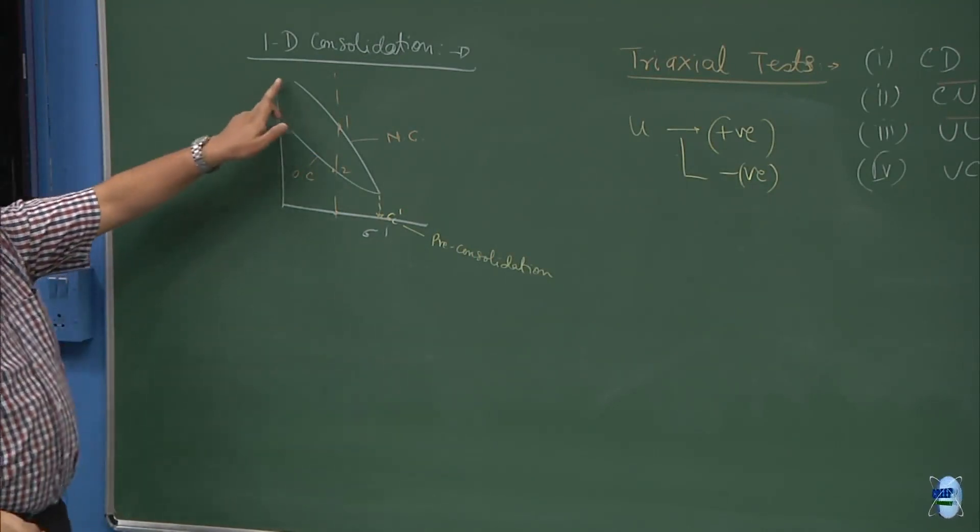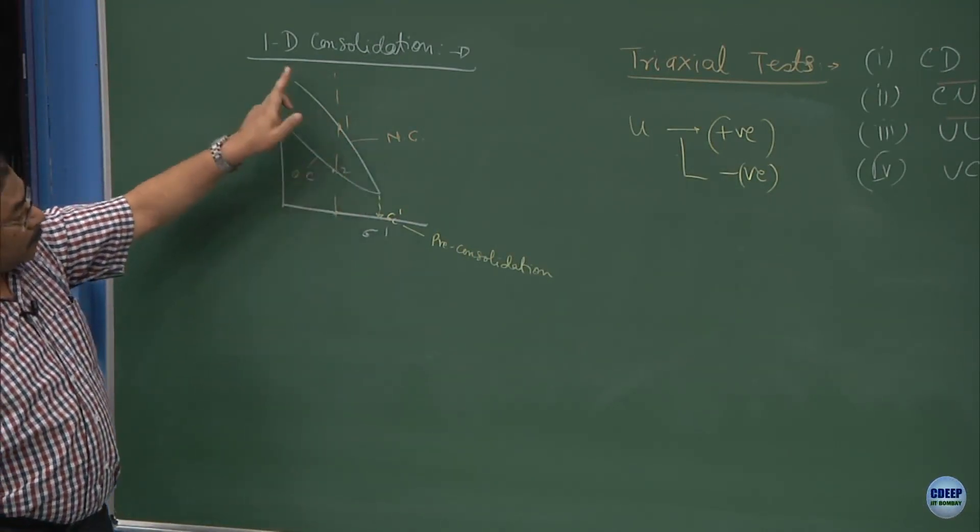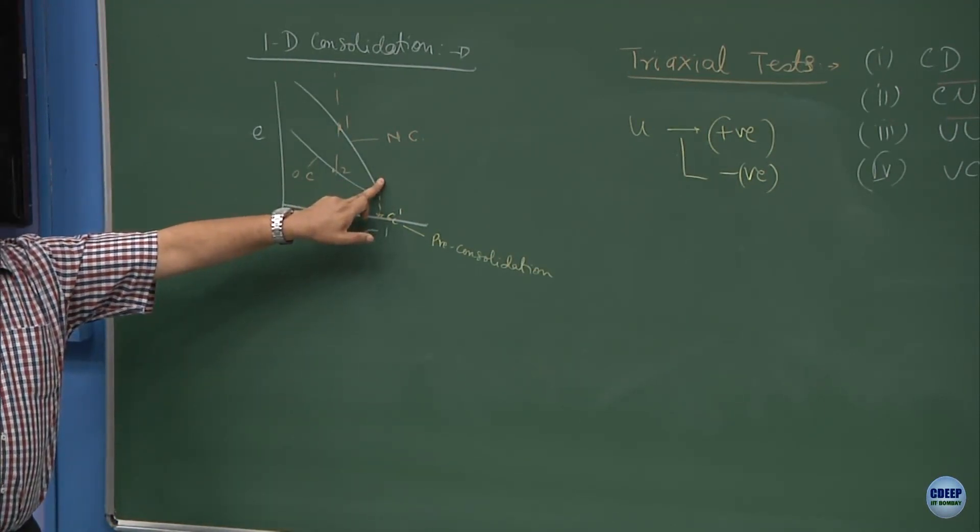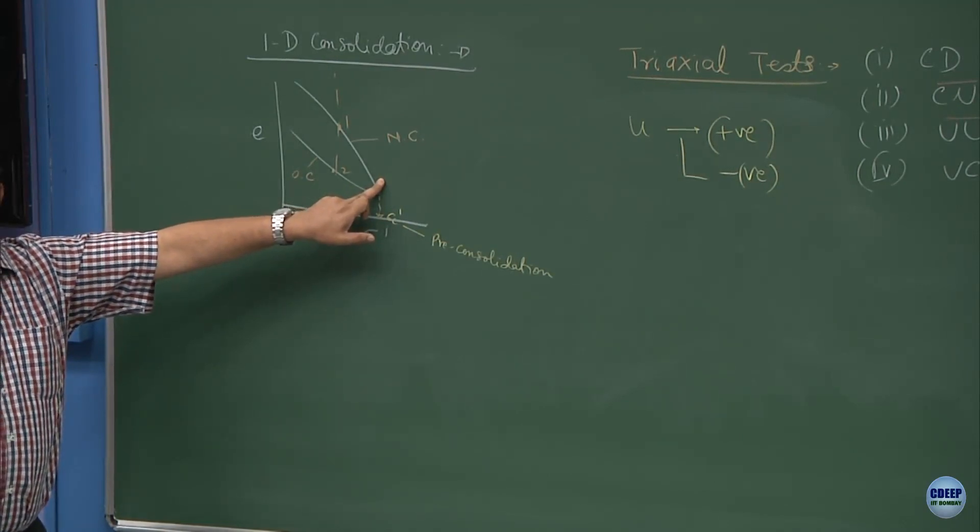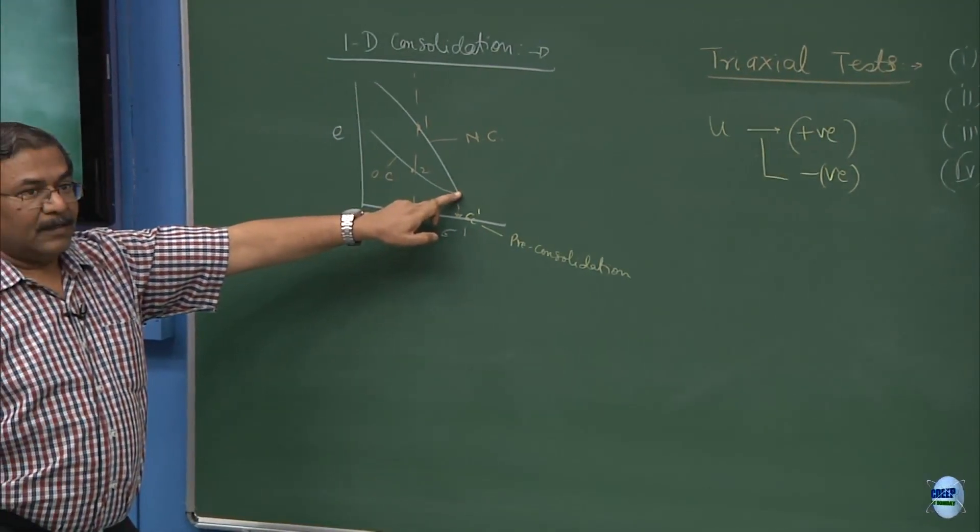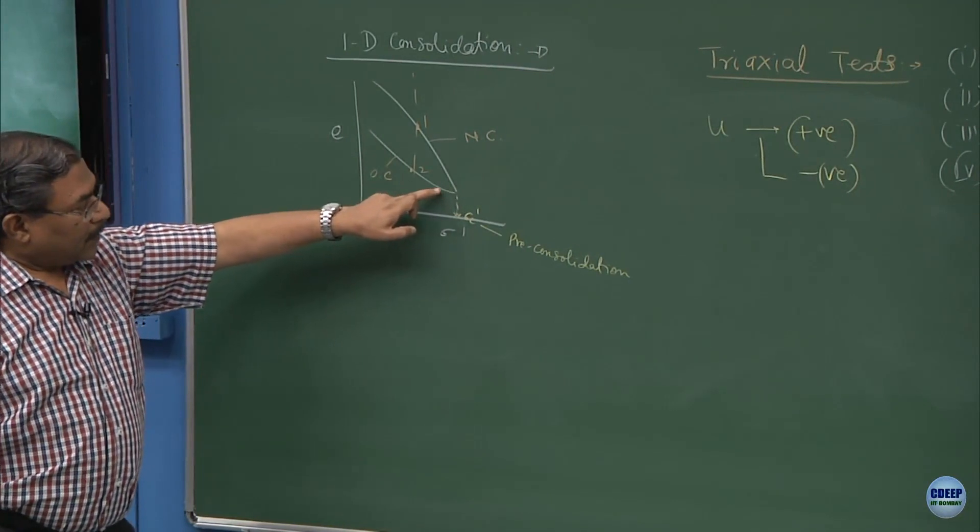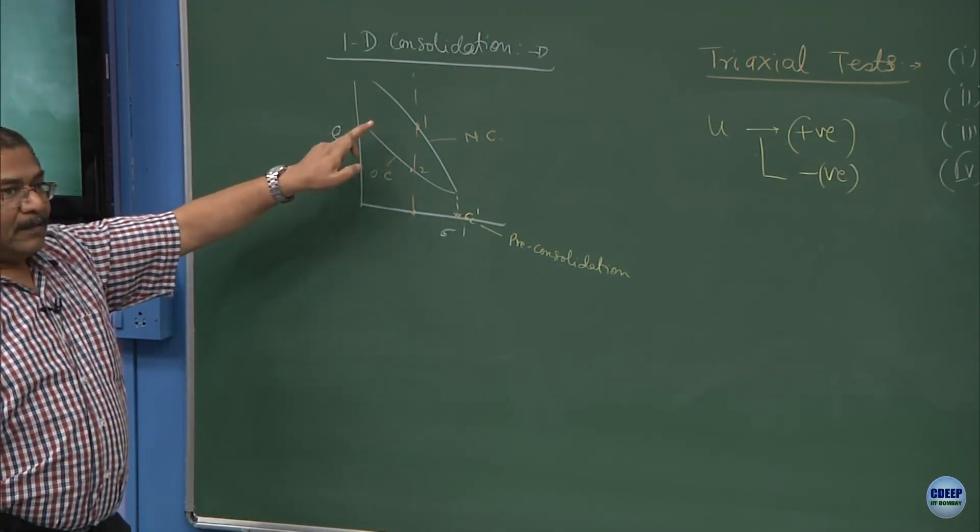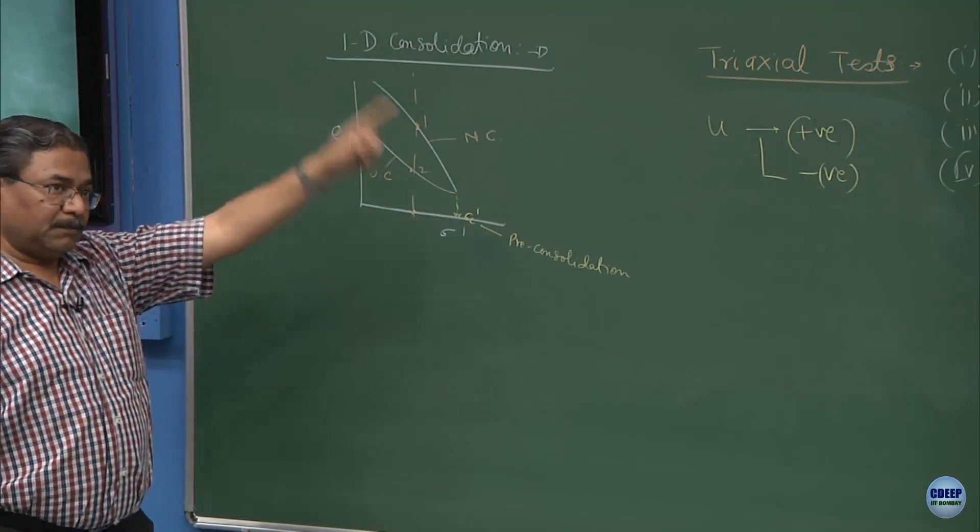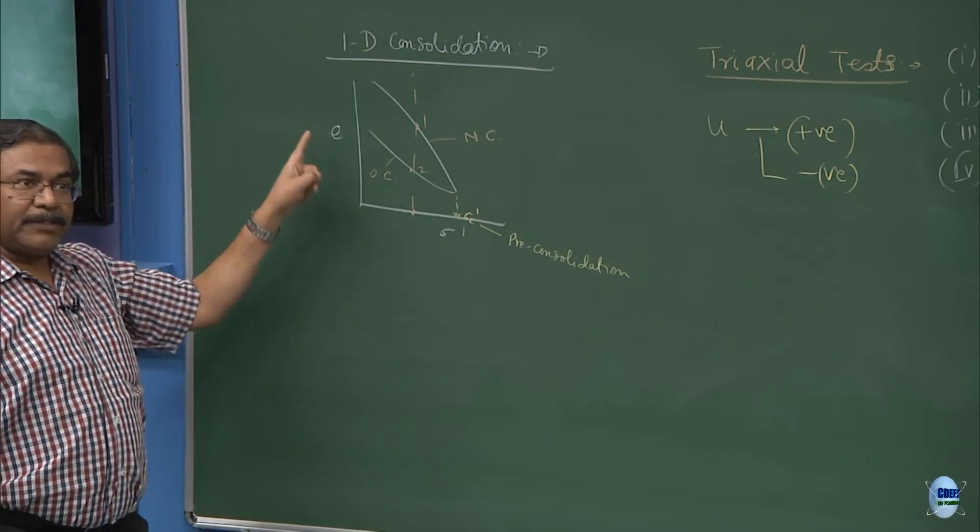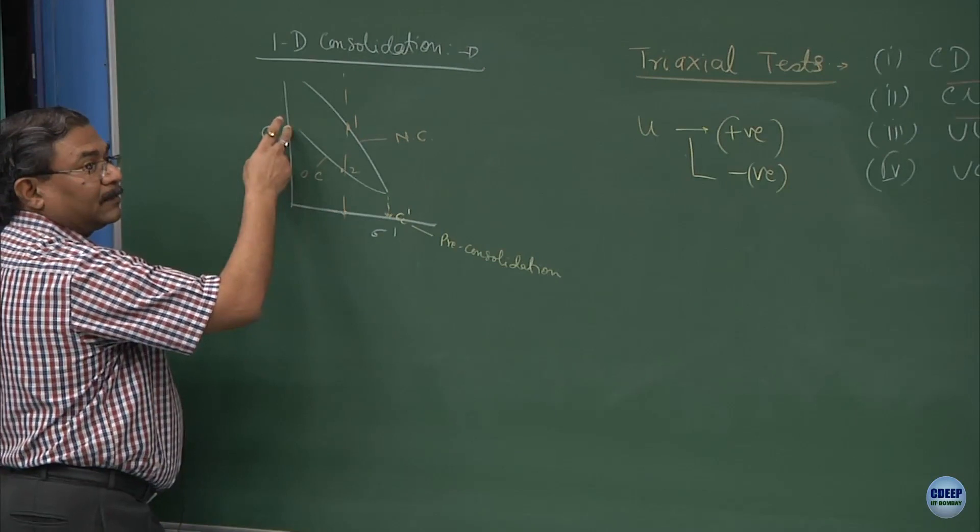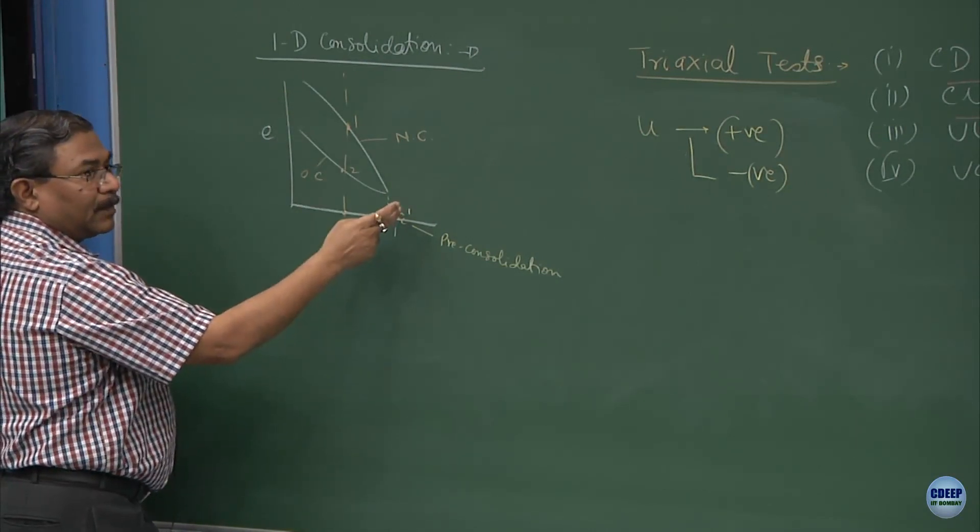We defined this as NC behavior, normally consolidated, and this is over-consolidated. This type of soil is going to exhibit maximum settlements because it has never been exposed to the pre-consolidation pressure in its past. Sample has already got this in its memory. It is behaving in a swelling manner. This is the compression part.